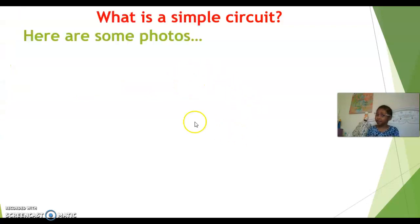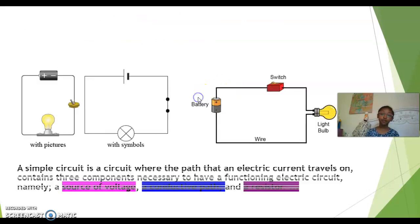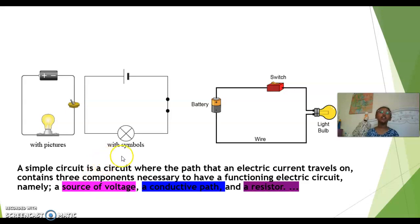What is a simple circuit? Here are some photos. A simple circuit is a circuit where the path that an electric current travels on contains three components necessary to have